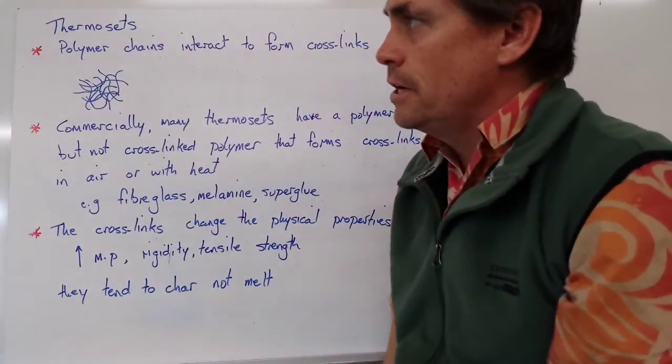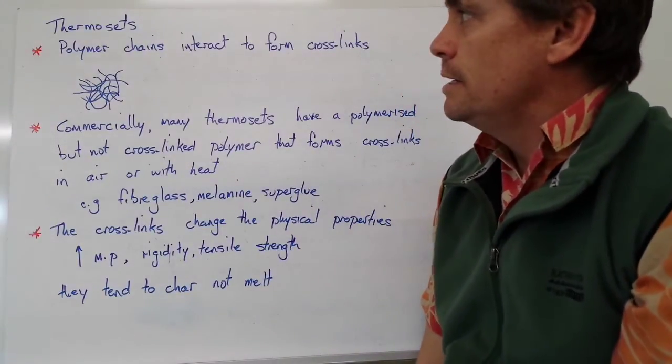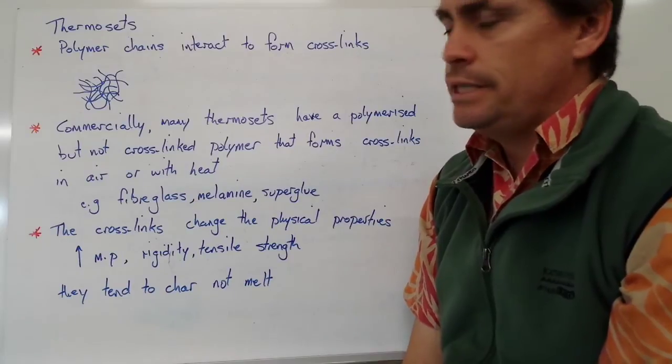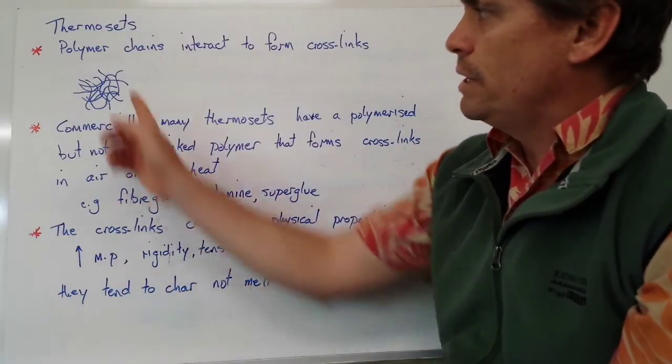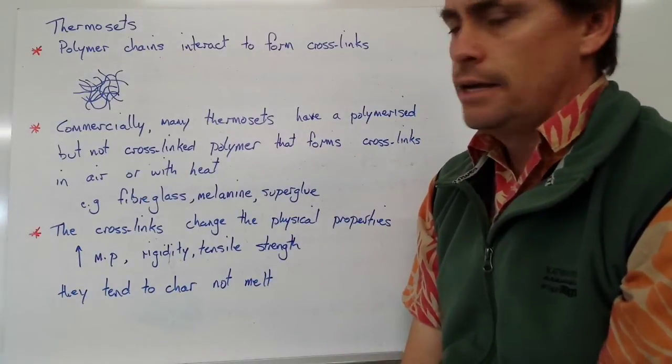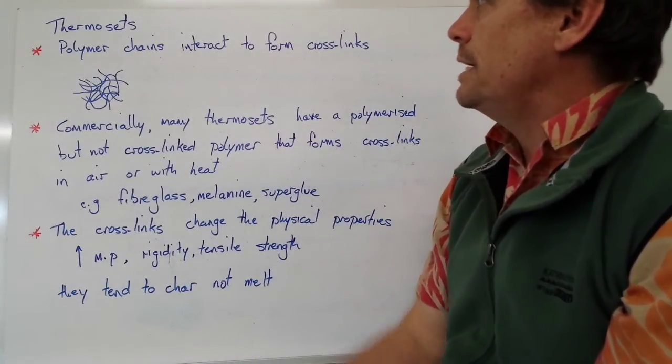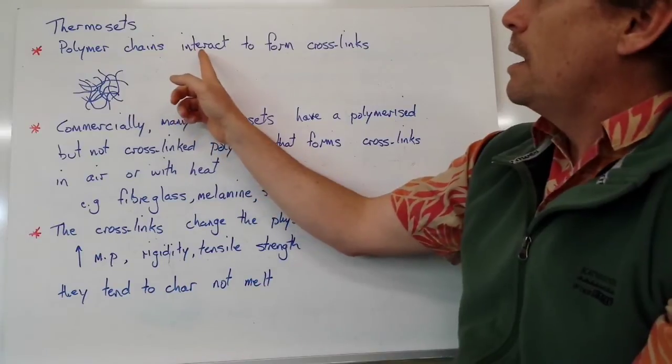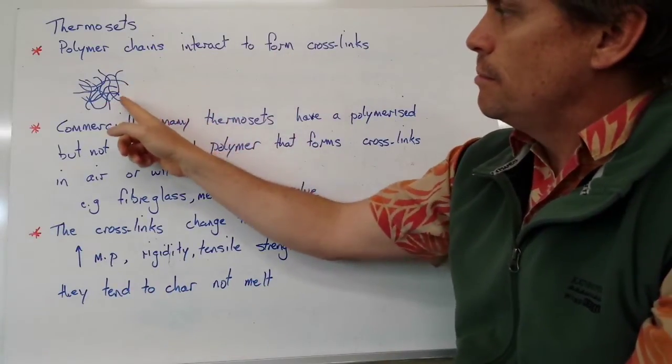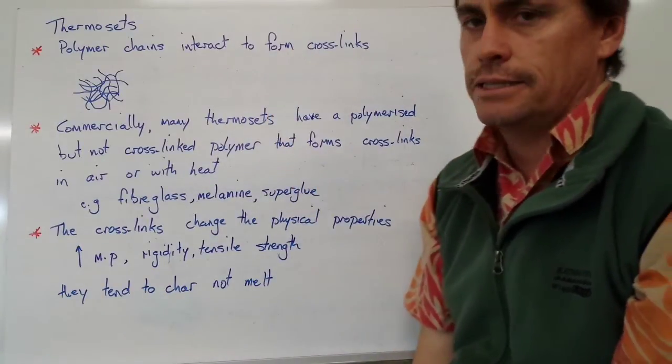Our second type of polymer is a thermoset polymer. Just as we did for the first diagram, we can draw a representation of this type of polymer. It's important to note that thermosets have a much higher degree of interaction between the polymer strands through cross-links.